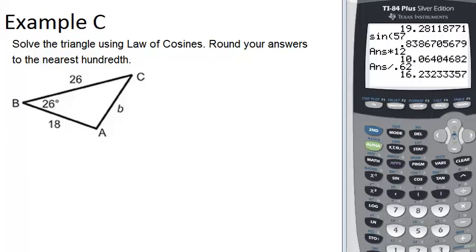It says solve the triangle using the law of cosines. Round your answers to the nearest hundredth. So in this case, we have an angle and an opposite side from it and two other sides.